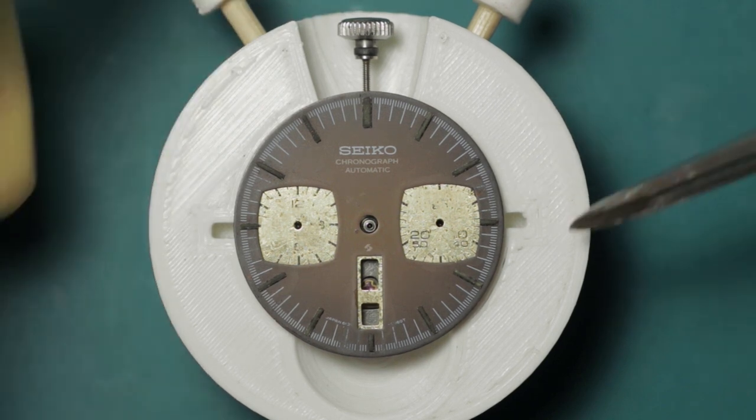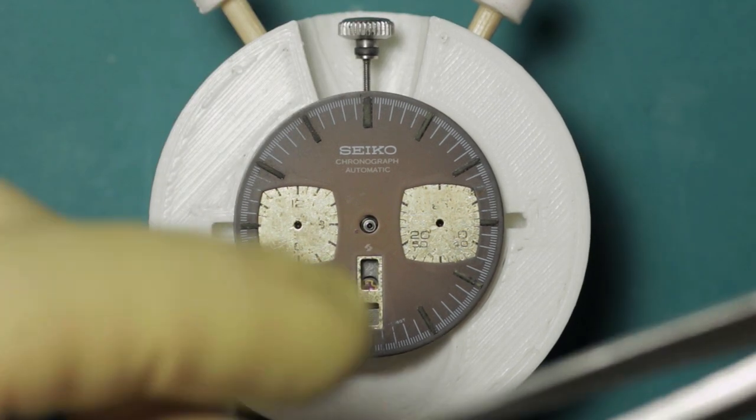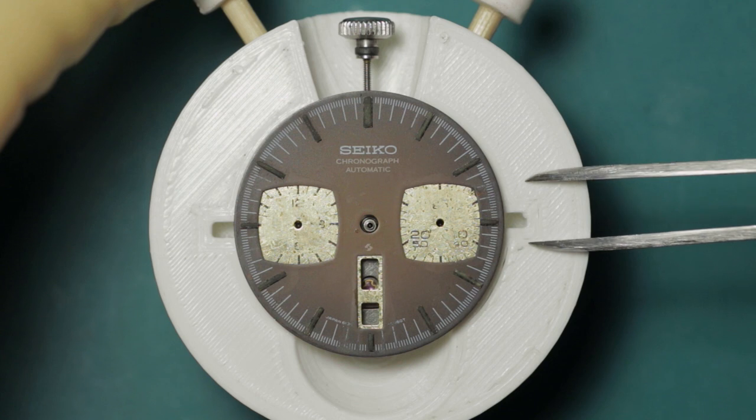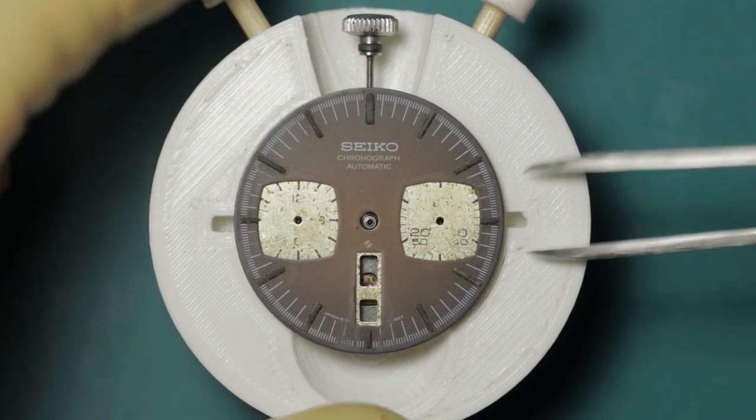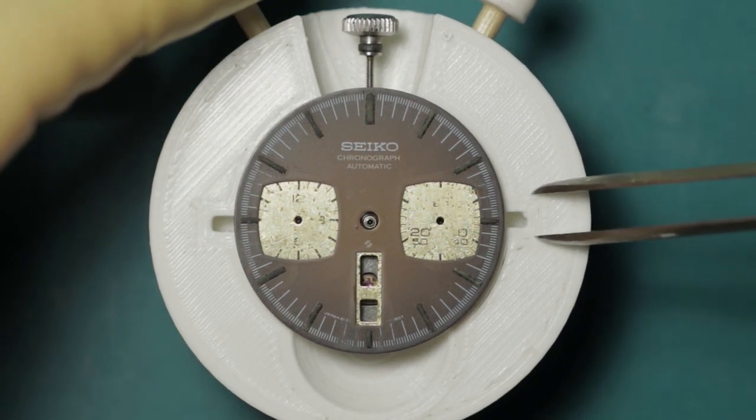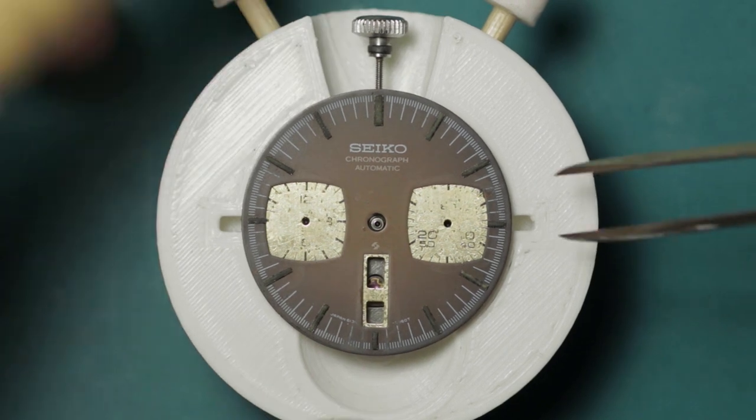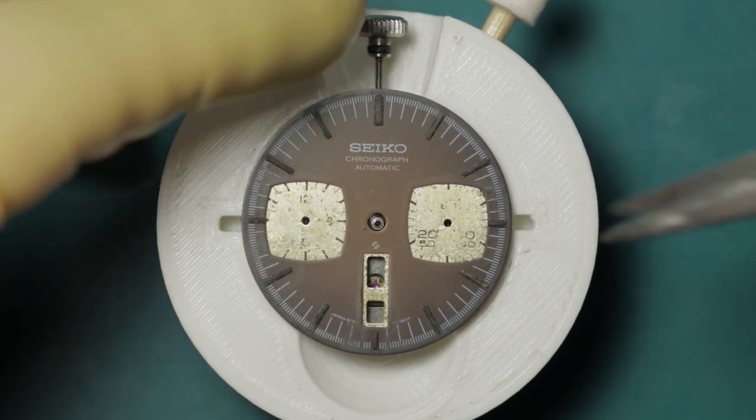Hi guys and welcome. A quick little snippet, just a short video to show a particular problem I've encountered. This is the second 6138 movement I'm working on this week. I'm just starting to strip this one, and as you can see, this is a brown dial bullhead.